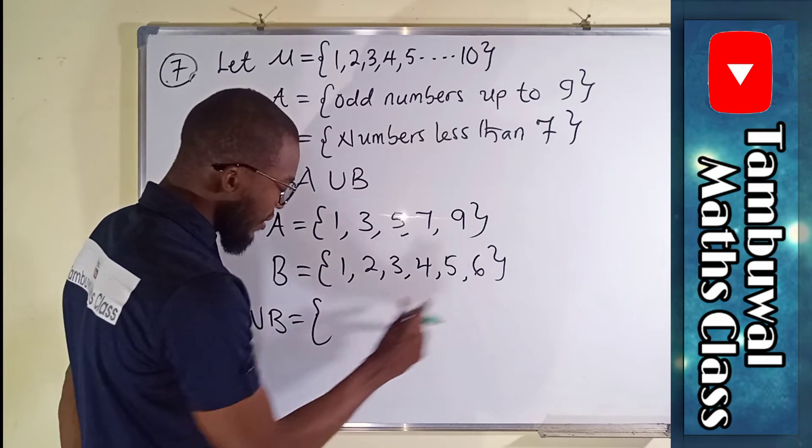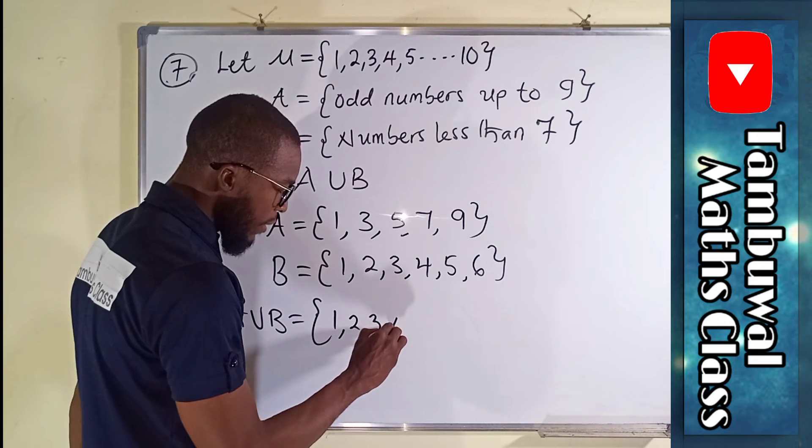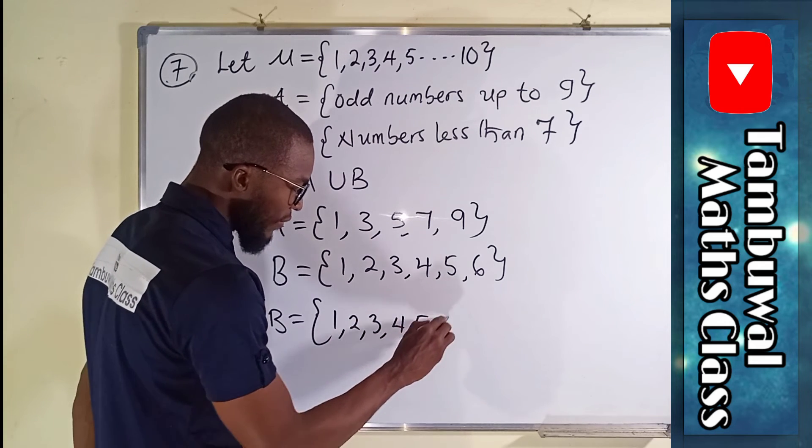You can see we already have one, two, three, four, five, six here. We can start with B: one, two, three, four, five, six.